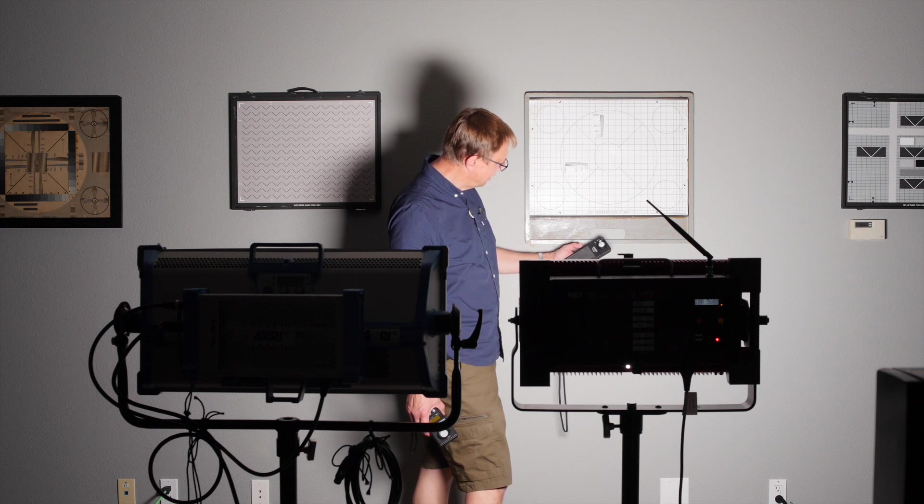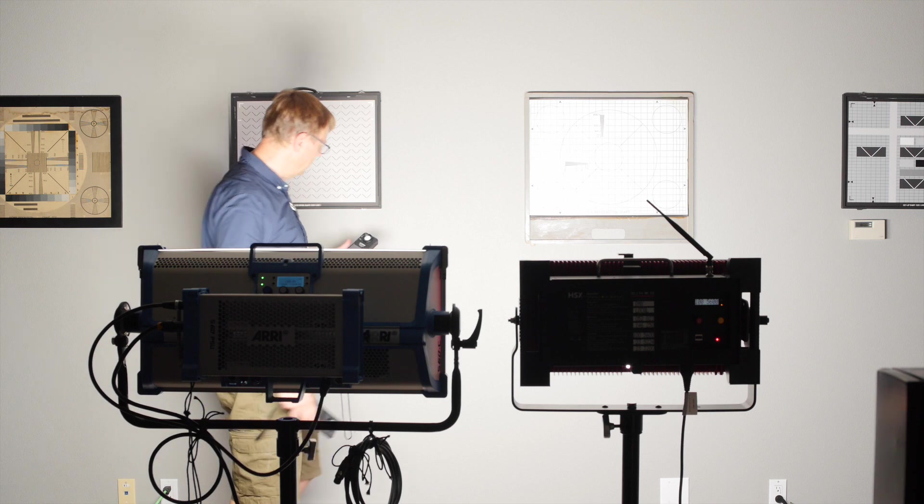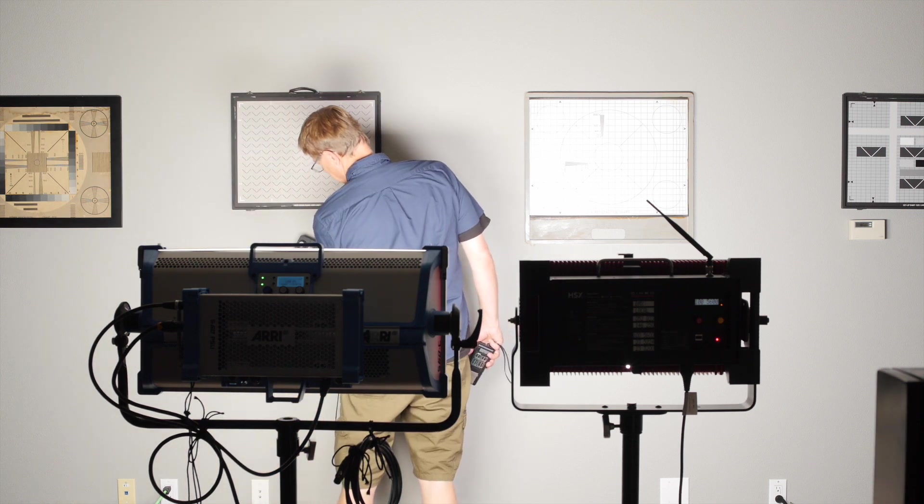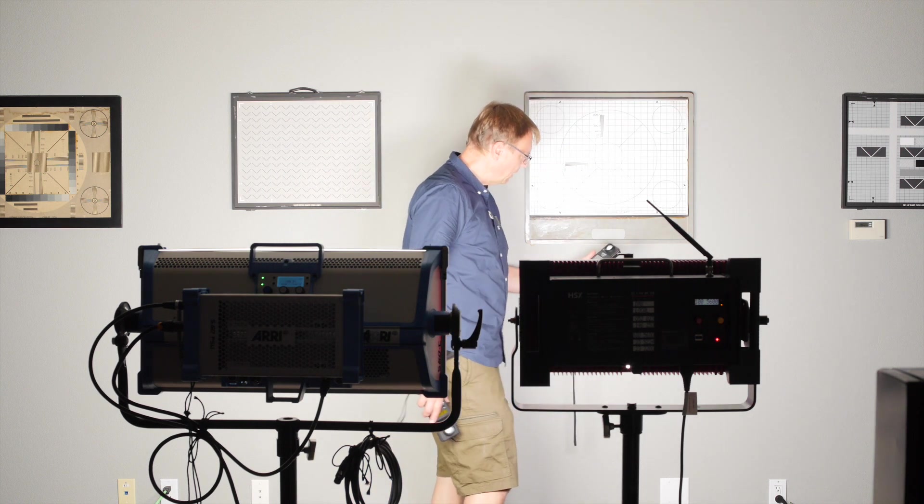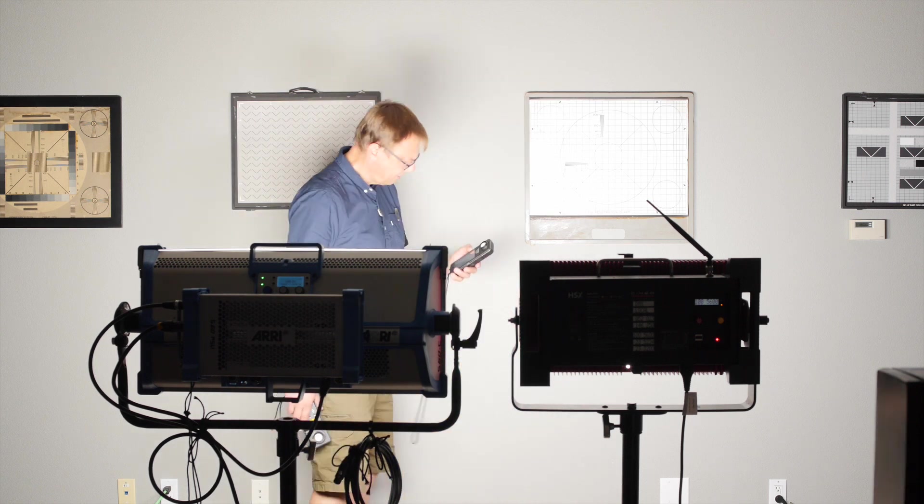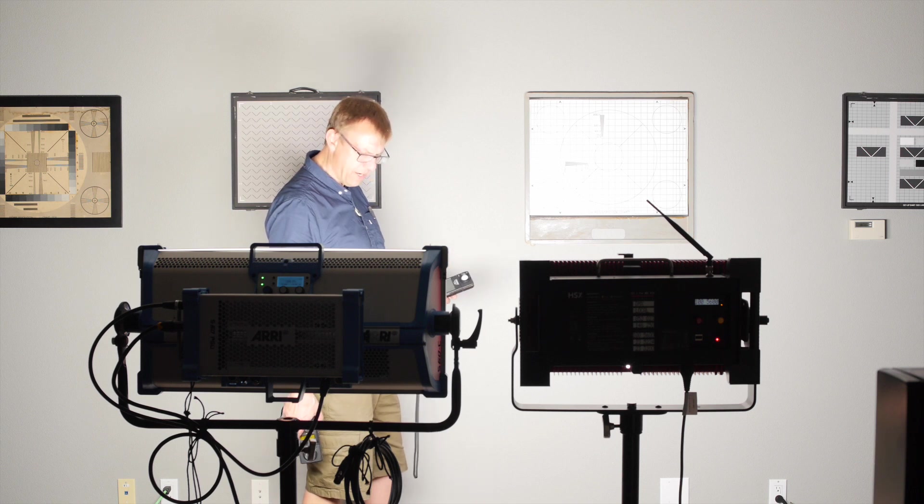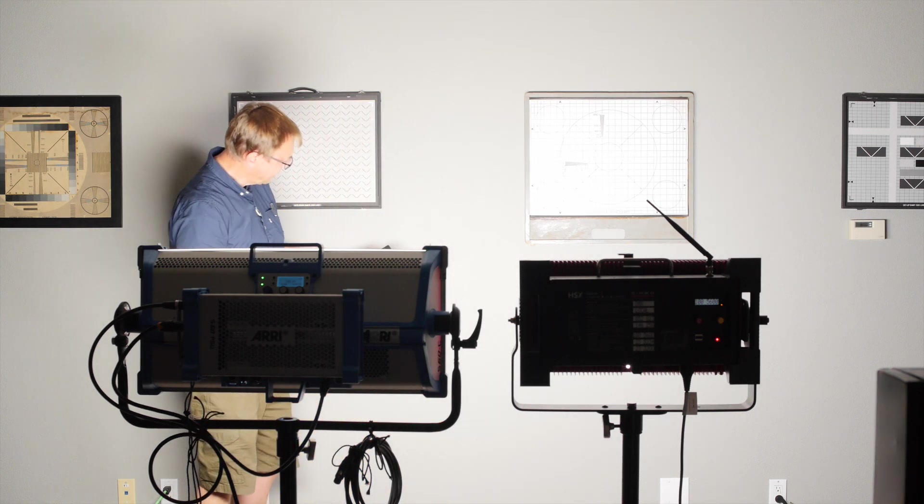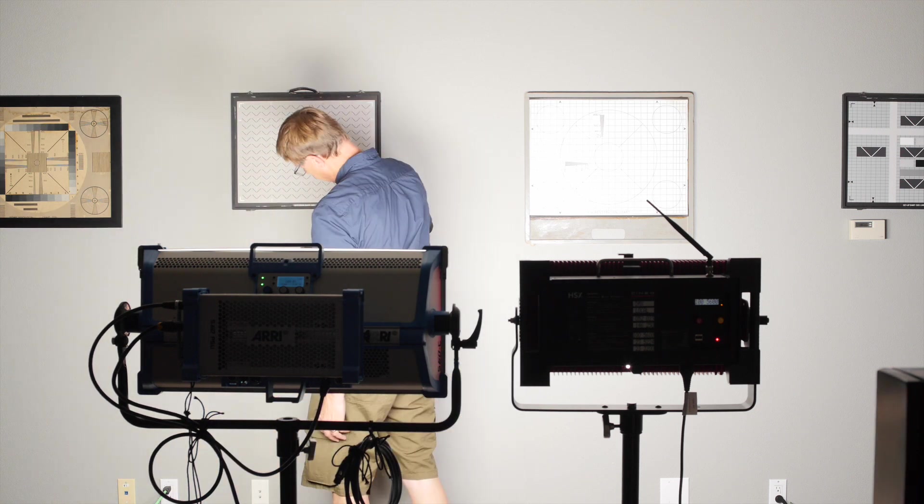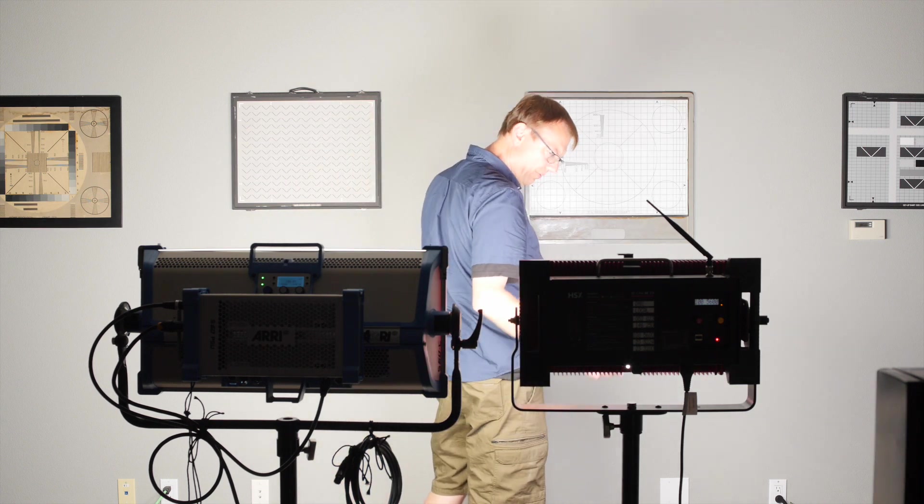Now just for yucks, I'm going to turn this guy back on. So this is 5,600 at 100. And now if I stand in the way - okay, that's one. And if I stand in the way of this one, now you can't see it, but there's a much higher green spike in the SkyPanel. So if I'm actually trying to take out green, if I use my old meter to look at green, I'm seeing a plus three green from the SkyPanel and I'm seeing zero from the HSX.